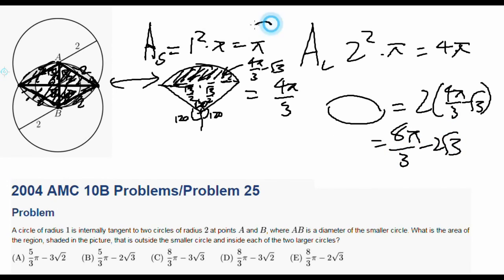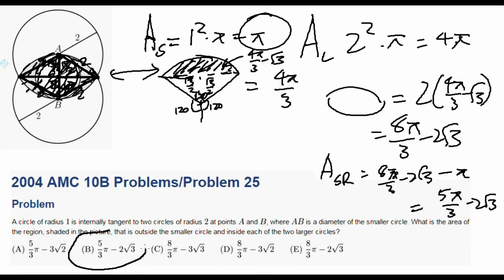And remember, we have to subtract pi, because we're subtracting the area of the smaller circle. So area of shaded region is just 8 pi over 3 minus 2 square root 3 minus pi, which is just 5 pi over 3 minus 2 square root 3. If we look at our answer choices, that's B.